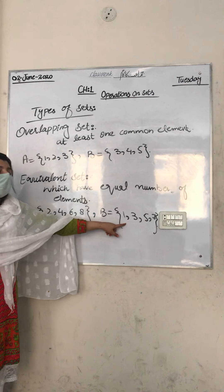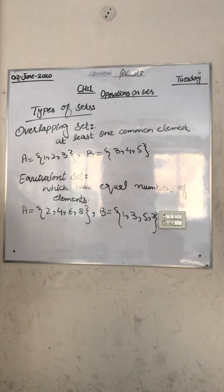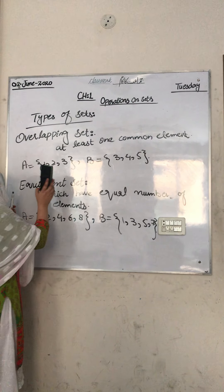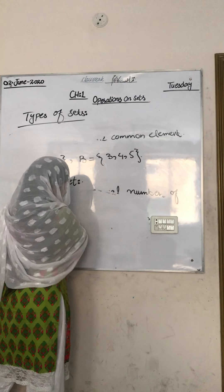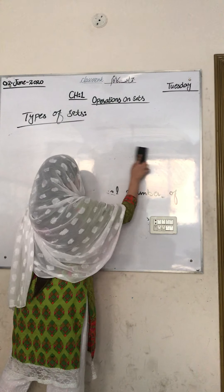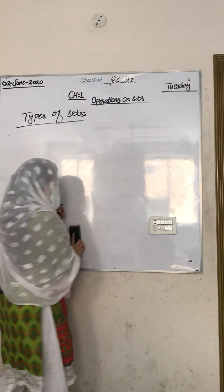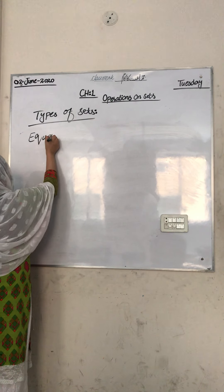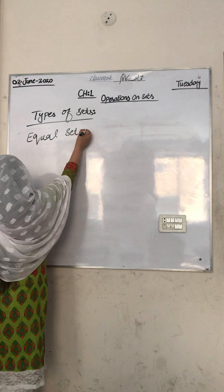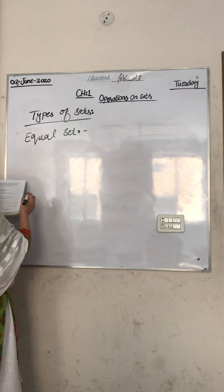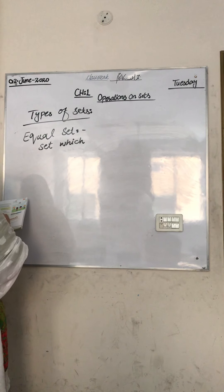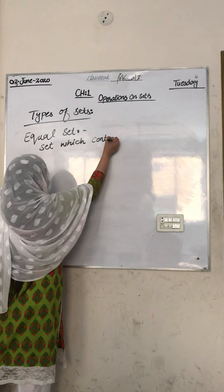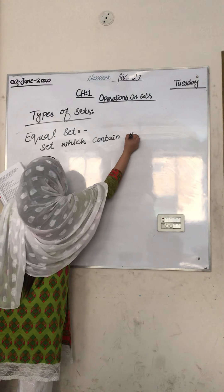Our next type is equal set. An equal set is a set which contains the same elements in both sets.